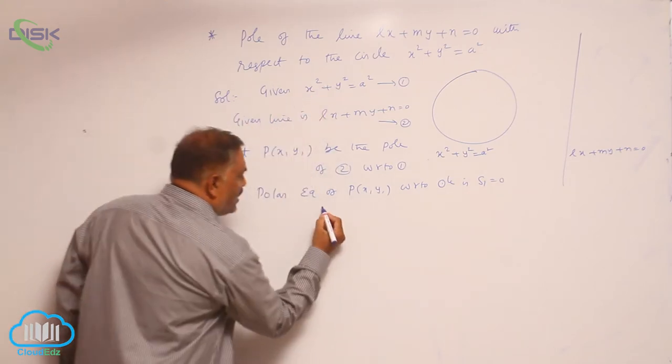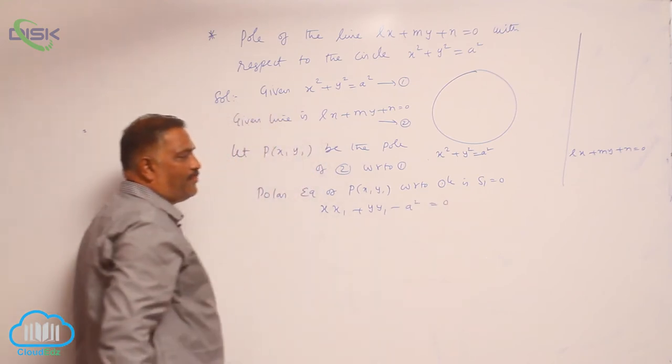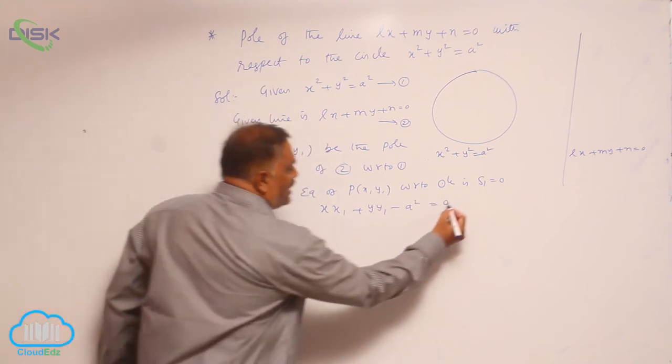How to write S₁ now? xx₁ + yy₁ - a² = 0. Now, call it equation number 3.